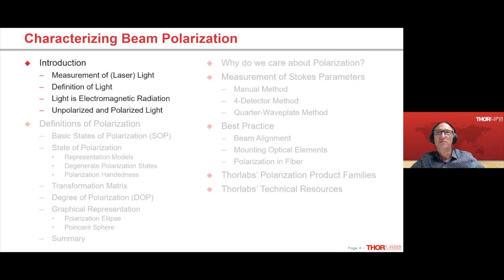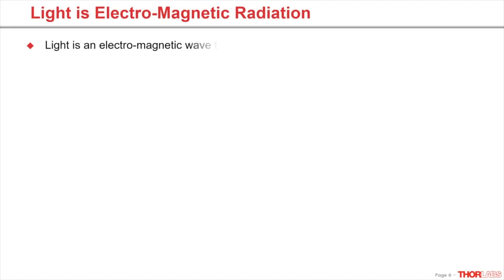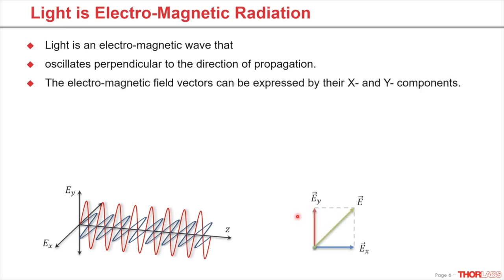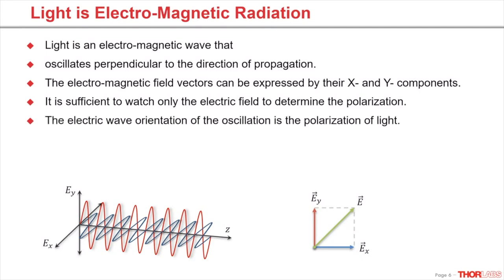Let's start with some basics about light. Light is known as an electromagnetic radiation that ranges from gamma rays to radio waves. For today's webinar, we will focus on the 350 nanometer to 2.5 micron range in which polarization measurement and analysis is possible with a reasonable effort. Light can be seen as an electromagnetic wave that oscillates perpendicular to the direction of propagation. The electromagnetic field vectors can be expressed by their X and Y components. Since the electric field and the magnetic field perpendicular to it propagates uniformly, it is sufficient to only consider the vectors of the electric field in order to determine the polarization of light. Polarization is described by the electric wave orientation of the oscillation over time and space.